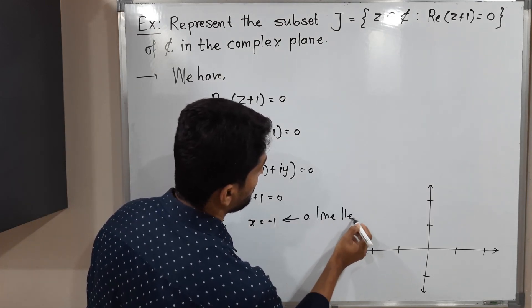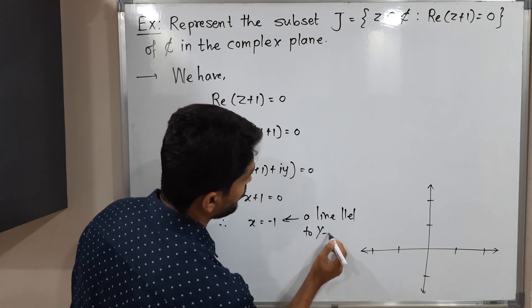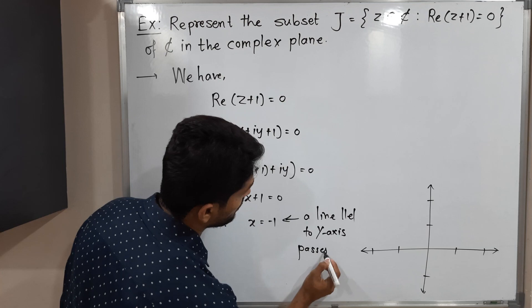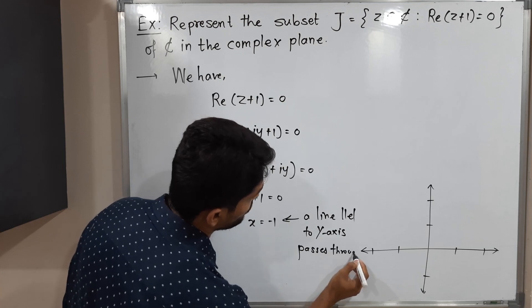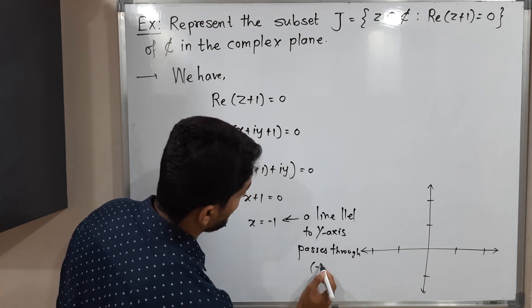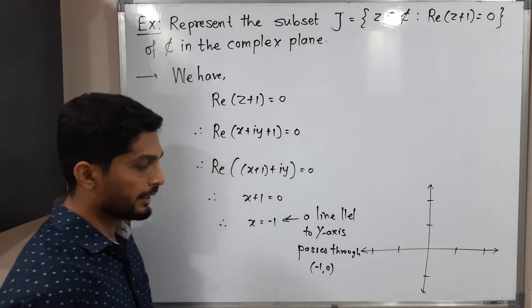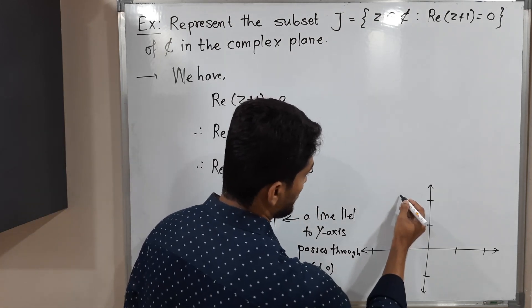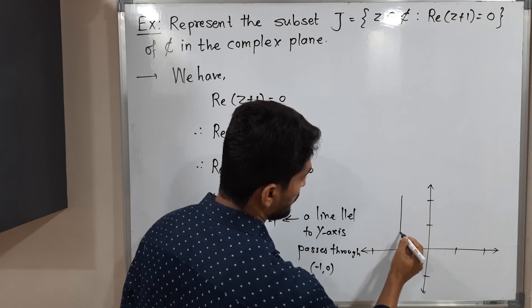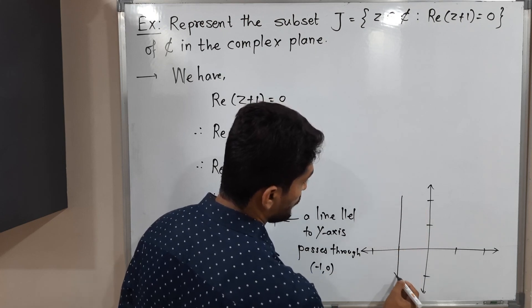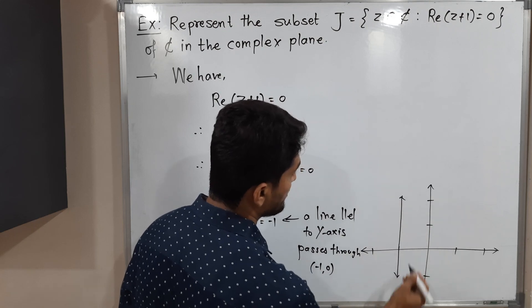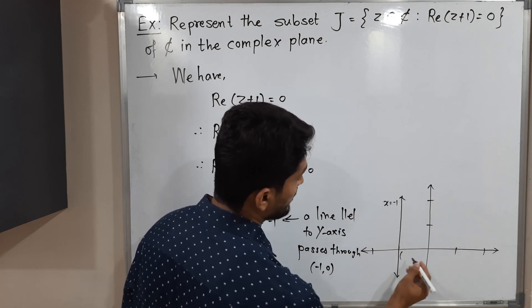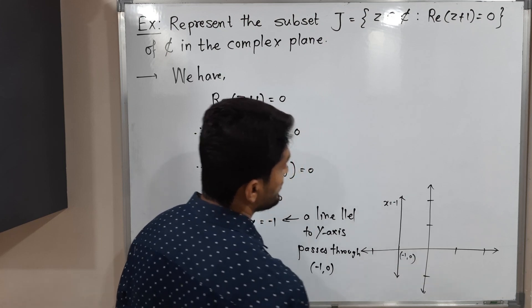So let me mention here: a line parallel to Y axis passes through minus one comma zero. Let me draw that line on this complex plane. We have a line here which is parallel to Y axis or you can say imaginary axis and passes through minus one comma zero.